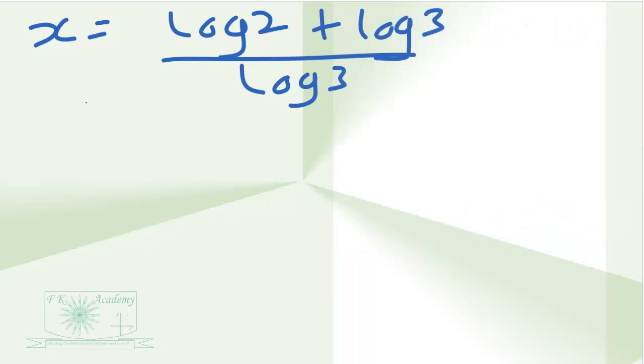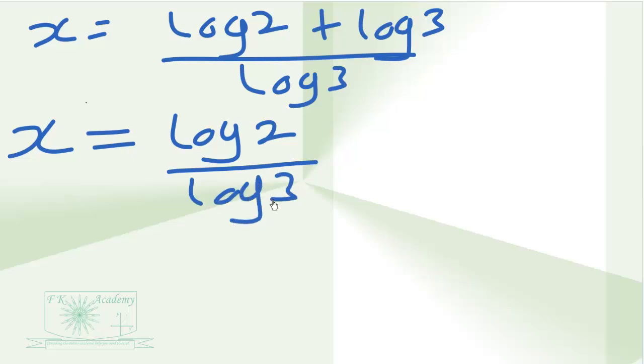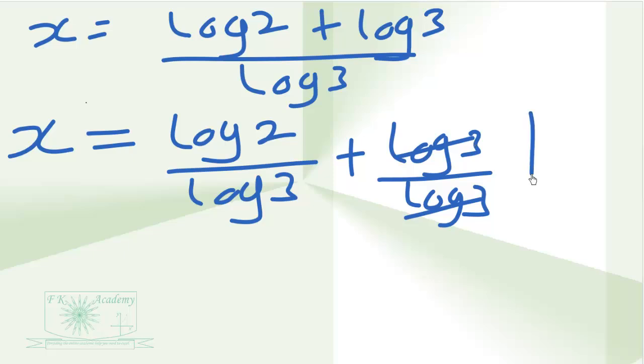Let's now divide the numerators by the denominator. So x will be equal to log 2 divided by log 3 plus log 3 divided by log 3. So this can cancel this. We are left with one here.